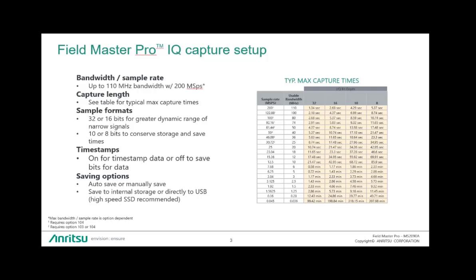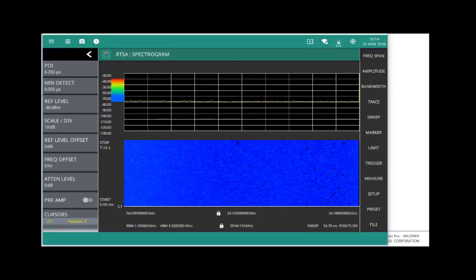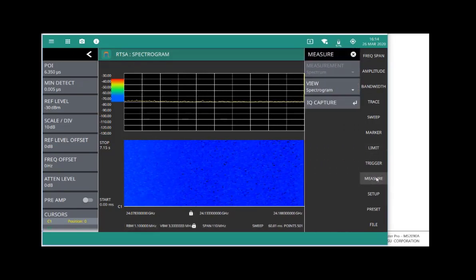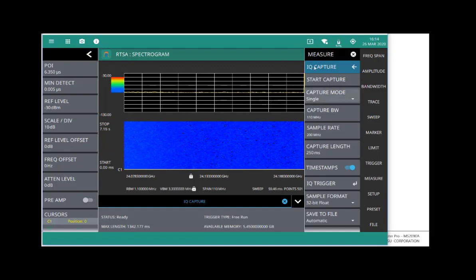So I'm going to actually open up, I'm connected to an instrument here remotely. I'm going to open up our IQ menus and show you a little bit about what we have here. So when I open up the menu, my IQ capture table opens up here. Before I start the capture, I want to check my setup. I can set up the instrument to capture either single or continuous or streaming. We're going to talk about streaming in a separate video.